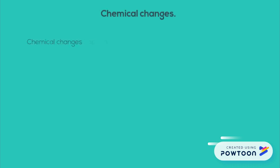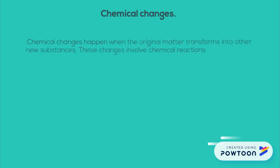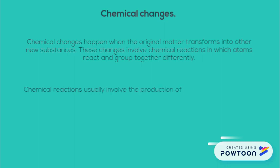Chemical changes. Chemical changes happen when the original matter transforms into other new substances. These changes involve chemical reactions in which atoms react and group together differently. Chemical reactions usually involve the production of gas, light or heat, and/or a color change. They cannot be reversed.